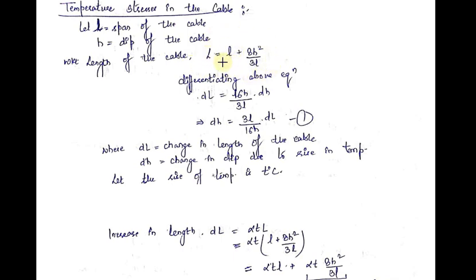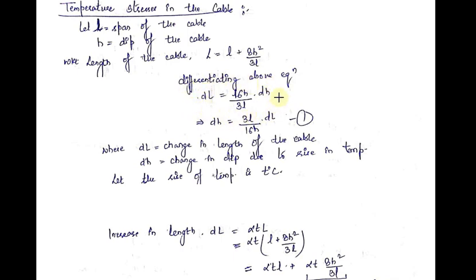Small l, which is the horizontal distance between the supports, is a constant term because that distance is not going to change. Now if I differentiate this equation, the differentiation of capital L will become dL. Small l is a constant, therefore its differentiation will be 0. 8 by 3l is a constant and h squared differentiation will be 2h into dh. So after differentiation, I will get dL equal to 16h by 3l into dh.